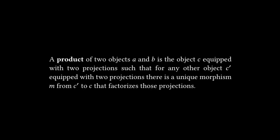And then we get to the product and co-product subsection. The two main points from these sections are: a product of two objects A and B is the object C equipped with two projections such that for any other object C prime equipped with two projections, there is a unique morphism M from C prime to C that factorizes those projections.